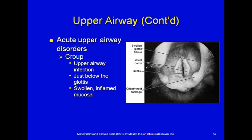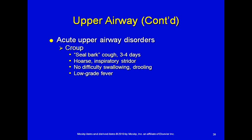Croup is often mistaken for epiglottitis. It's an upper airway infection just below the glottis where the subglottic tissue becomes swollen and inflamed. The child will be hoarse with inspiratory stridor, difficulty swallowing, possibly drooling. The fever isn't high grade — if present, it's just low grade. They'll have a seal-like barky cough for several days. This is a gradual onset, whereas epiglottitis is sudden or acute onset. Croup mainly worsens in the evening or early morning hours, primarily at night.